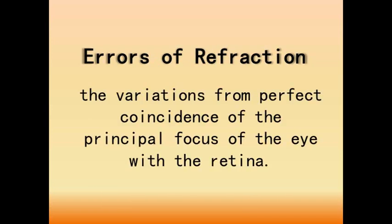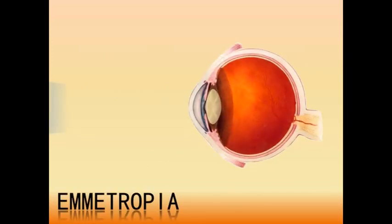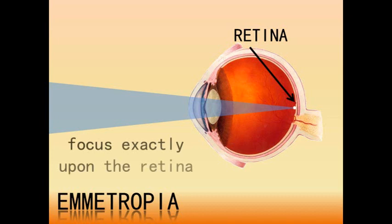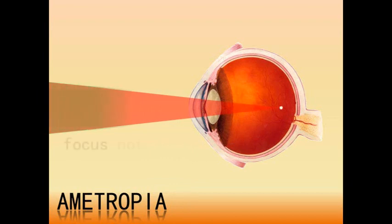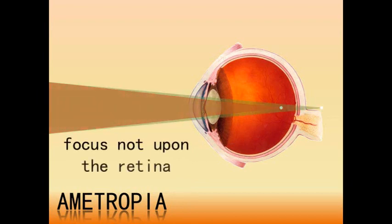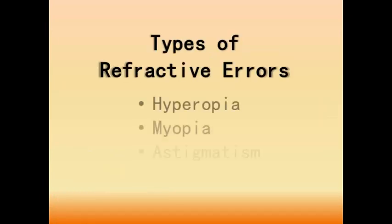Errors of refraction describe the variations from perfect coincidence of the principal focus of the eye with the retina. Emetropia is a refractive condition in which, with accommodation fully relaxed, parallel rays of light converge to focus exactly upon the retina. Ametropia is a refractive condition in which parallel rays of light focus either in front of or behind the retina. There are three types of refractive errors: hyperopia, myopia, and astigmatism.